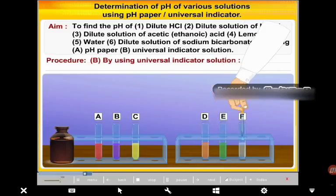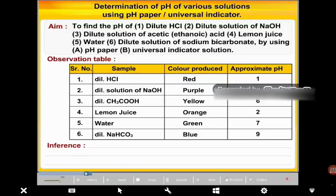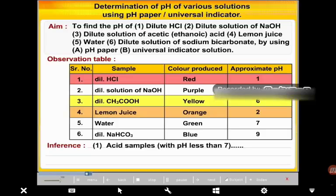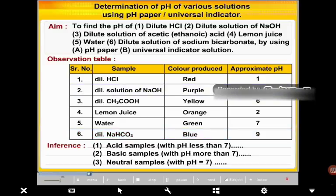This is the observation table for the Universal Indicator method, same format as the earlier table. Inference: (1) Acidic samples have pH less than 7. (2) Basic samples have pH more than 7. (3) Neutral samples have pH equal to 7.